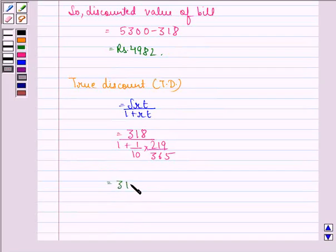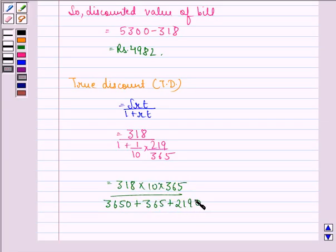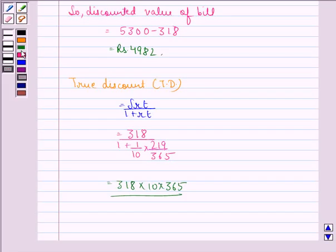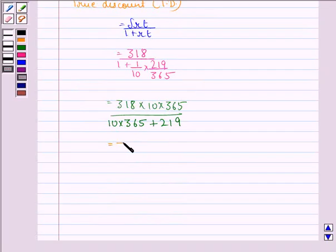Sorry, in the denominator here we will have 10 times 365 plus 219, and this is further equal to 318 times 3650 divided by 3869, and this is equal to rupees 300.